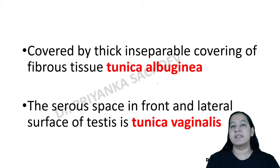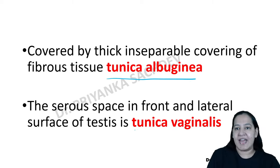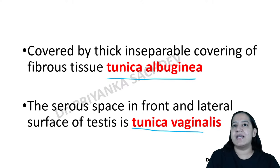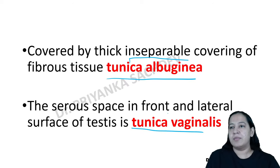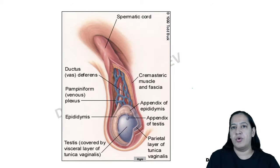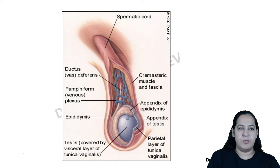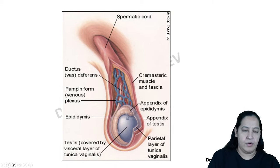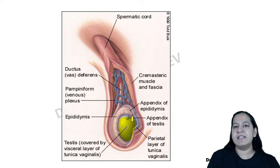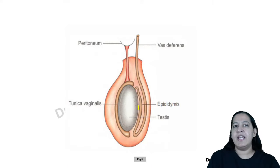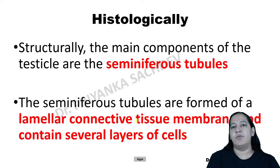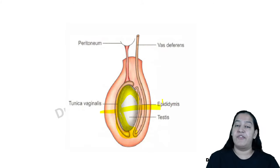The testis is attached with the epididymis and considered a single organ. There are two coverings: tunica albuginea, which is inseparable from the testis, and tunica vaginalis, which covers the lateral and anterior surface. On histology, if you cut the testis you see multiple tubules known as seminiferous tubules with a lumen inside.